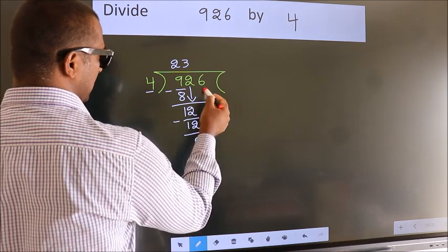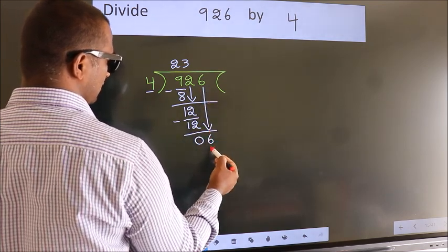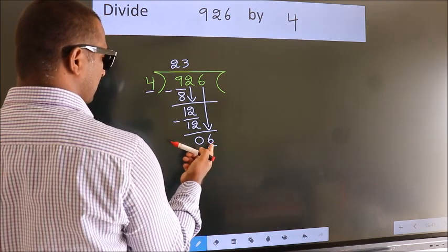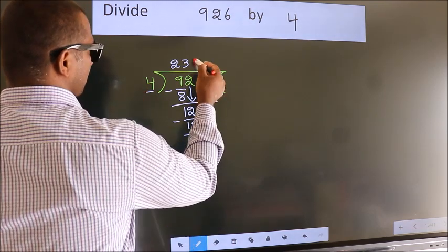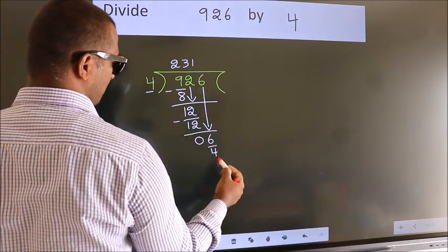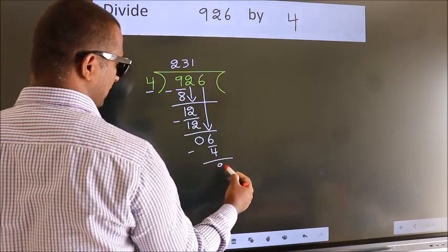After this, bring down the beside number, so 6 down. 6. A number close to 6 in the 4 table is 4 times 1, which is 4. Now we subtract. We get 2.